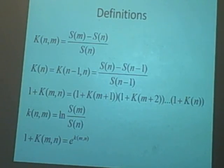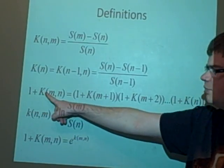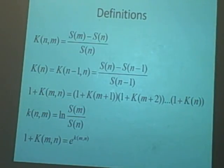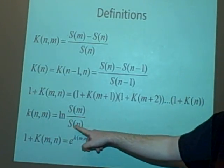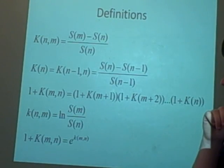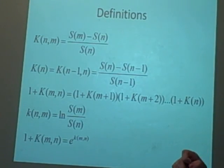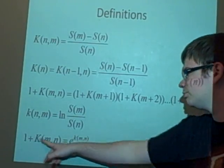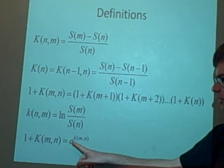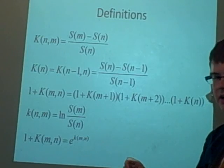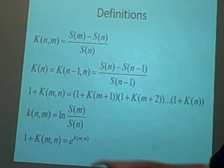Another thing is the logarithmic return, which instead of denoting as uppercase K, it's with lowercase k. So k(n,m) equals log S(m) over log S(n). I think it's different because I used two different books to learn about this. We can put this in the form 1 plus big K(m,n) equals the exponent of lowercase k(m,n). So this is the logarithmic return.